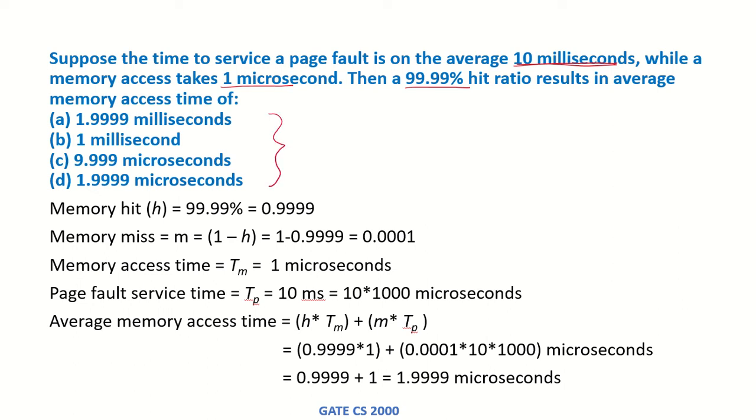These are the times given to us. Memory hit means the data that was requested for the address that the processor sent out was found in the memory, so it's a hit. This is the ratio: 99.99%.